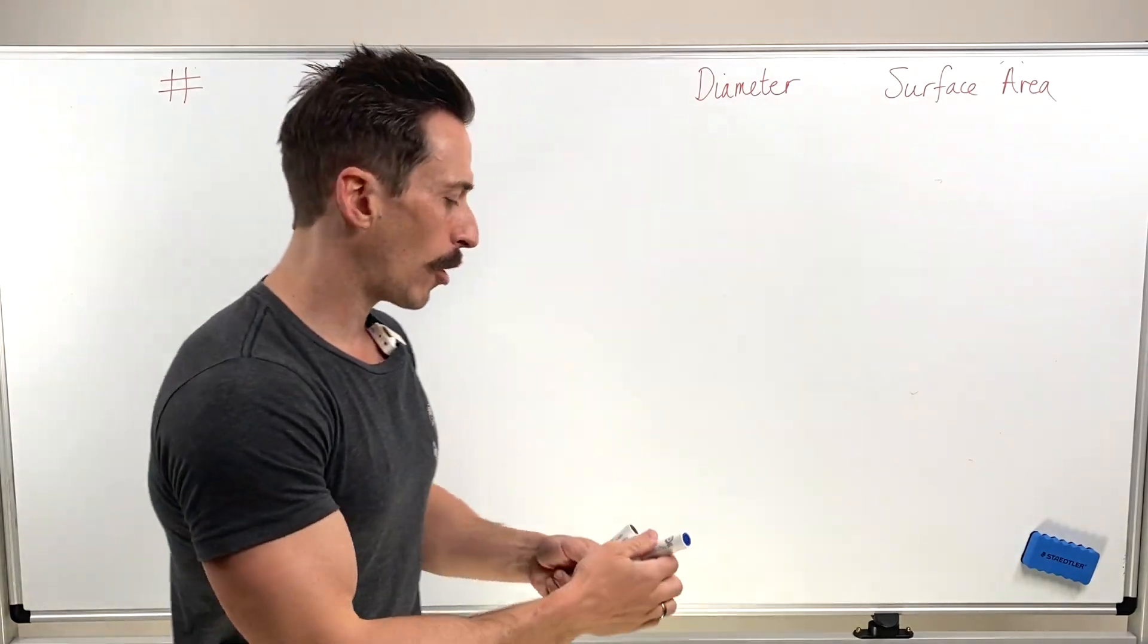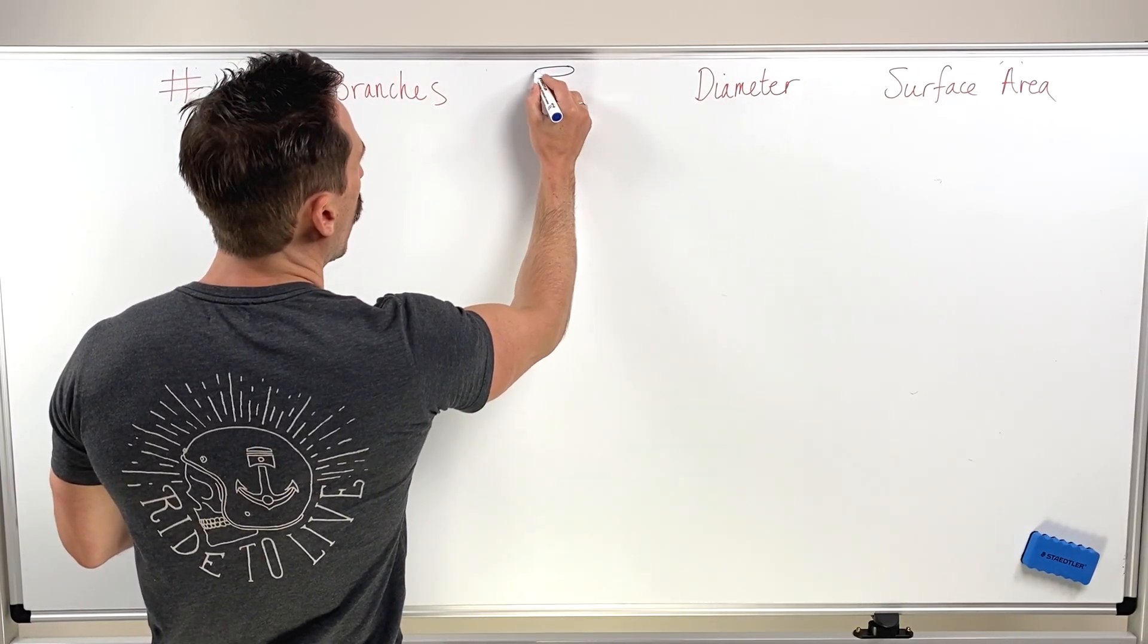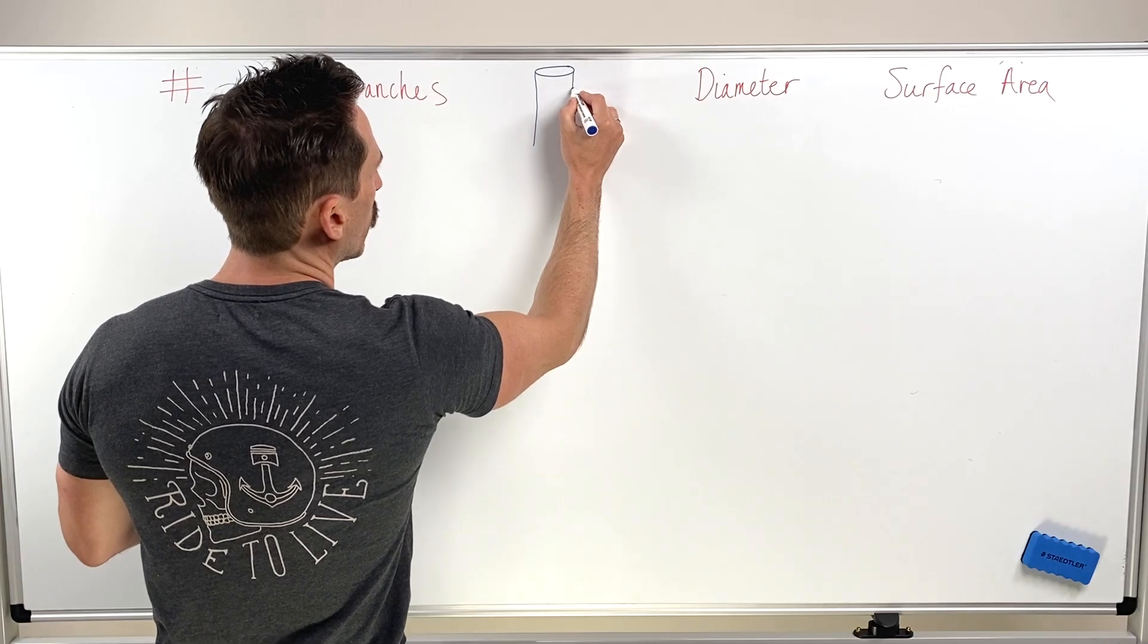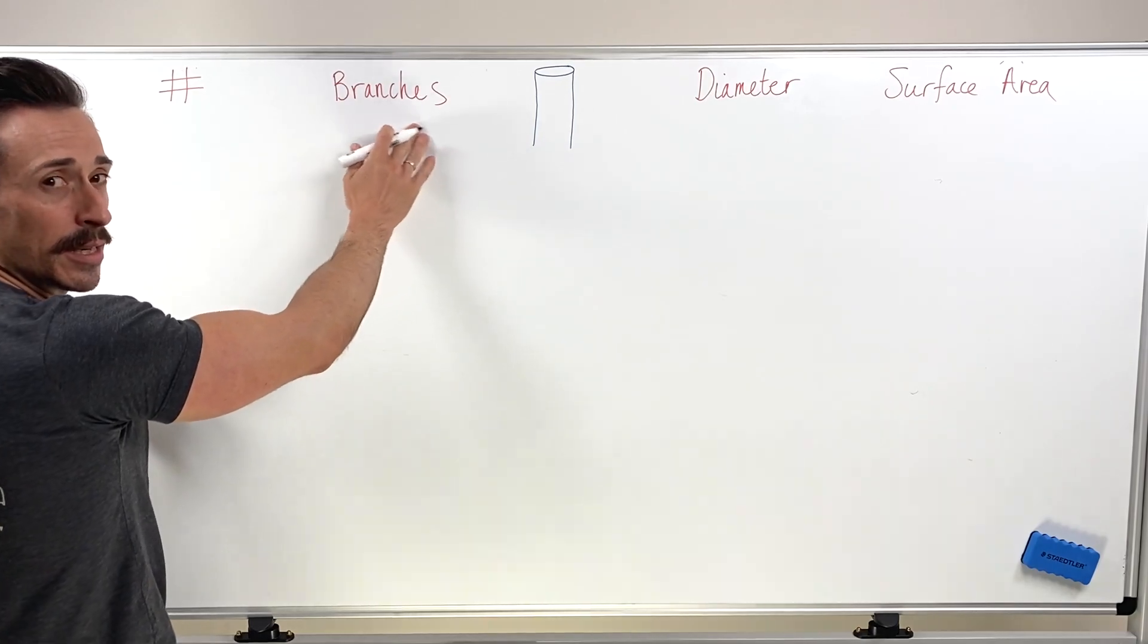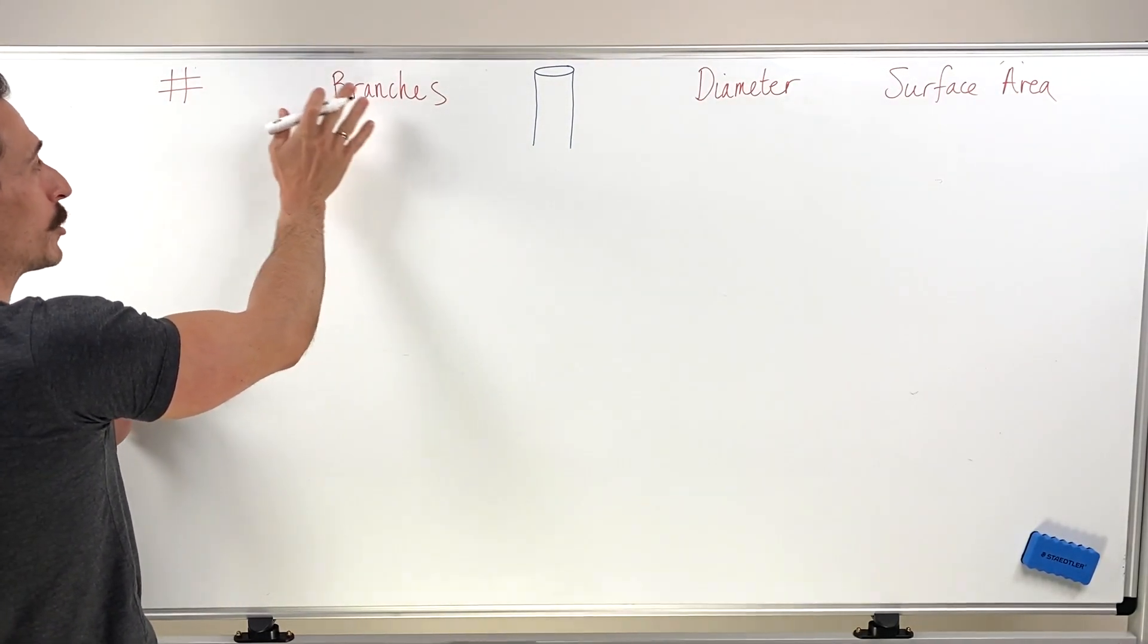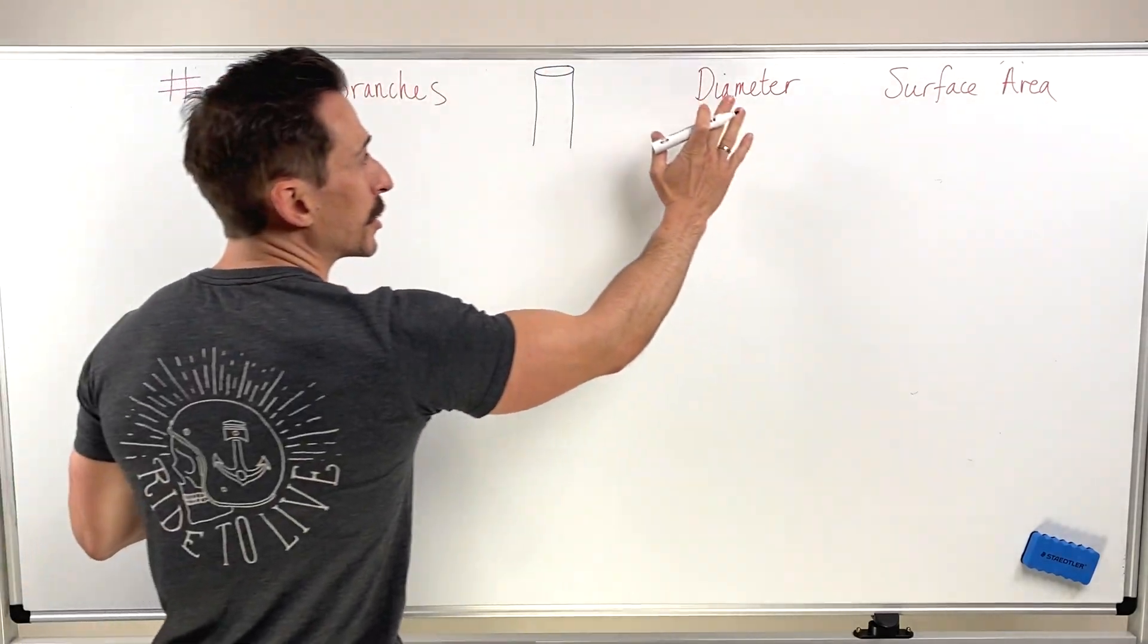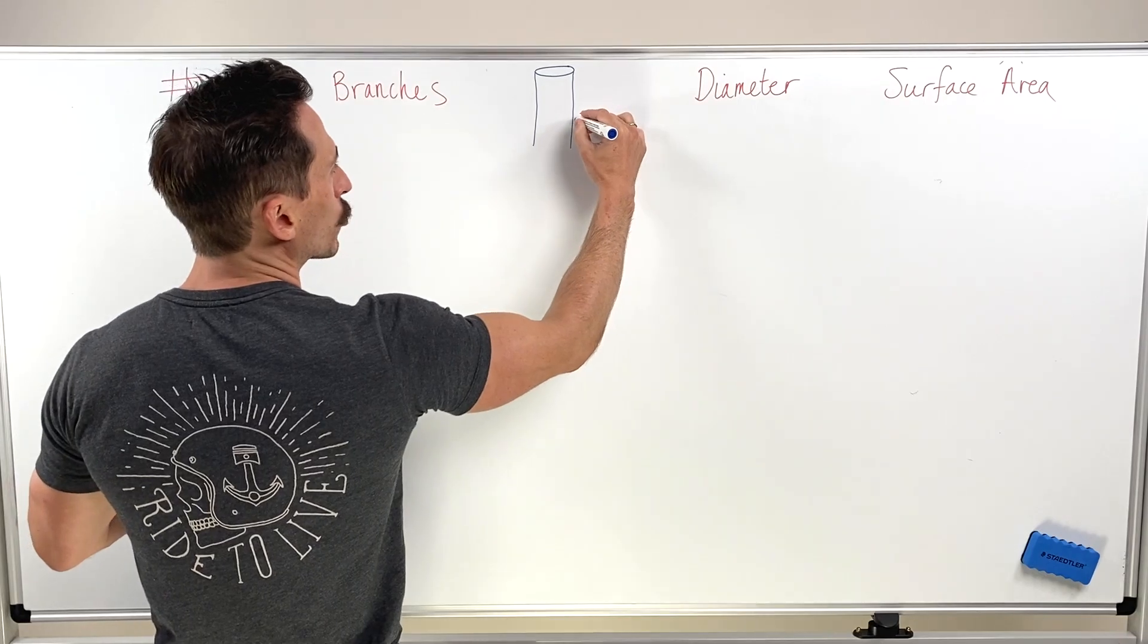So to begin, I want to start off with the trachea. The trachea is obviously the first pipe that we begin to transmit air through. Now you can see, we're going to have a look at how many branches it creates, the number of those branches, the diameter of these tubes, and also the surface area. So we're starting off here with the trachea.